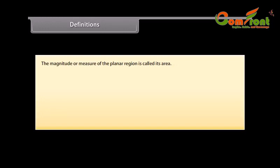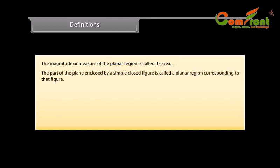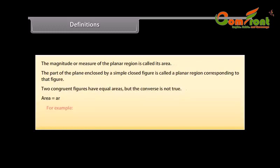Do you know what a planar region is? The part of the plane enclosed by a simple closed figure is called a planar region corresponding to that figure. Two congruent figures have equal areas, but the converse is not true. The area of a figure can also be denoted by ar. For example, area of triangle ABC can also be written as ar(ABC).